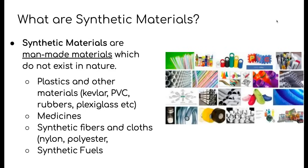Synthetic materials are man-made materials which do not naturally exist in nature. Some examples of synthetic materials are plastics. There are many different kinds of plastics and other similar materials like Kevlar, PVC, different types of synthetic rubbers, plexiglass, and many other plastic-like materials.